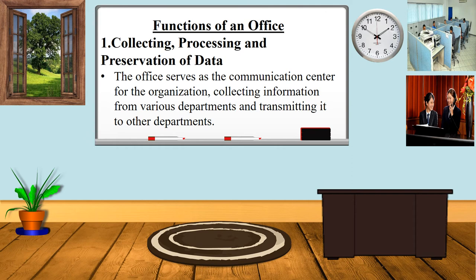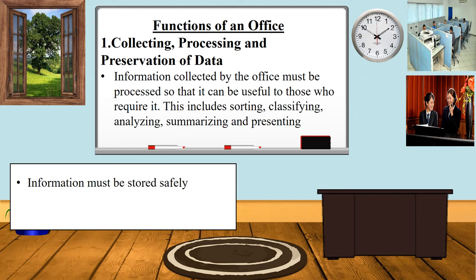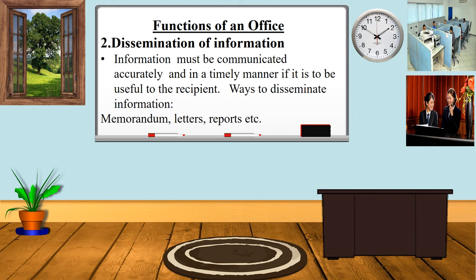The second function: information collected by the office must be processed so that when required, it includes sorting, classifying, analyzing, summarizing, and presenting data. The dissemination of information is also a key function — information must be communicated accurately and in a timely manner if it is to be useful to the recipient.